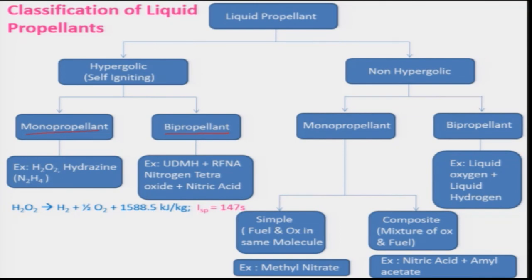The non-hypergolic propellant can again be broadly divided into two categories: one is monopropellant and the other is bipropellant. The monopropellant non-hypergolic propellant can be further divided into simple and composite propellant; simple propellant is one which contains both the fuel and oxidizer in the same molecule.